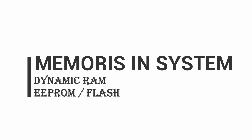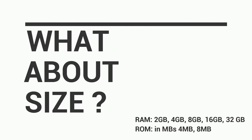Let's talk about size. RAM is available in sizes such as 2GB, 4GB, 16GB, or even 32GB. ROM is generally in the range of megabytes — 4MB or 8MB.